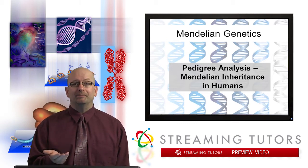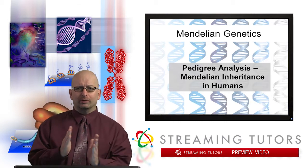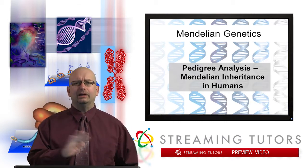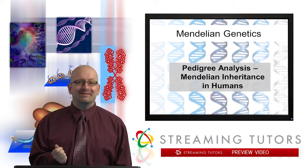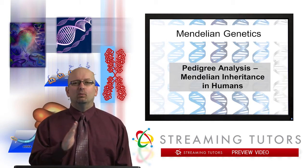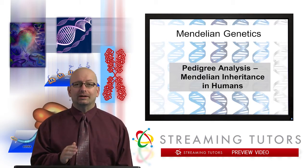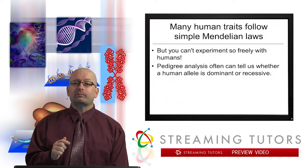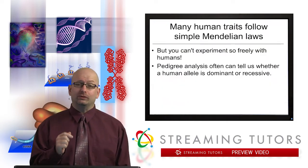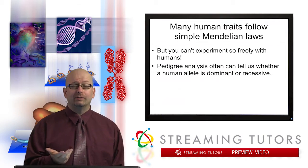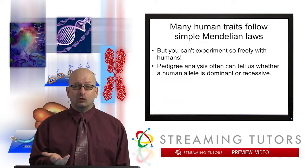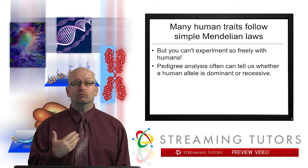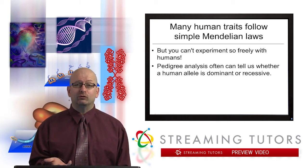Now of course there are a lot of interesting exceptions and it gets very complicated, which is why we have to have the class. But what we want to focus on here is human genetics. It turns out that many human traits — certainly not all, but many significant traits, both disease-causing and otherwise — do get inherited in humans in a relatively simple Mendelian fashion.